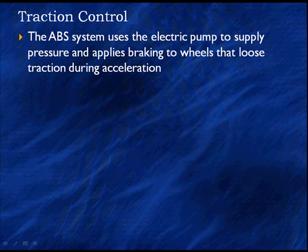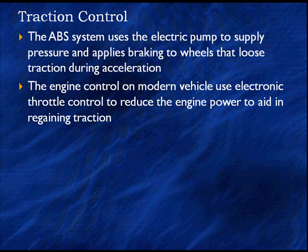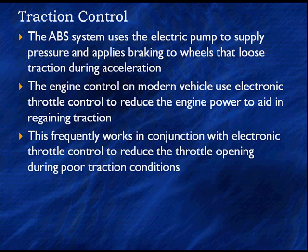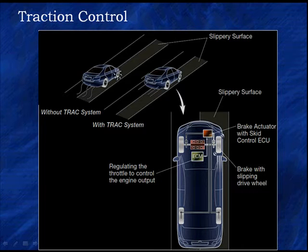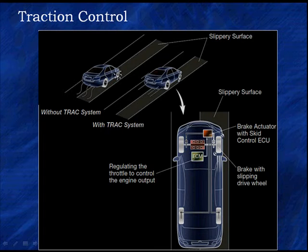Traction control. The ABS system uses the electric pump to supply pressure and applies braking to the wheels that lose traction during acceleration. On modern vehicles the engine control works in conjunction with the electronic throttle to reduce throttle opening during poor traction conditions. Without traction control we're moving around off-course, but with it we can go forward. The brake actuator or skid control ECU applies braking to the slipping wheel — in this case the one on the right with the slippery surface — so we can go straight up the road.